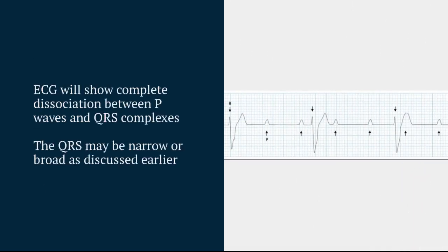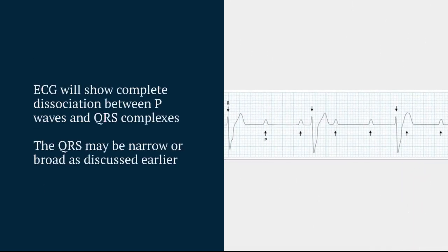The ECG, which we've alluded to already, shows complete dissociation between the P waves and the QRS complexes.